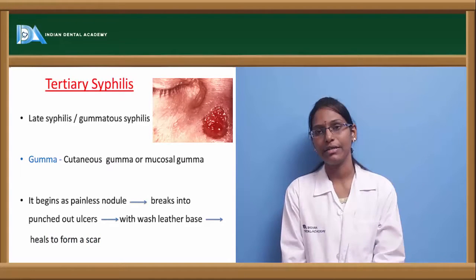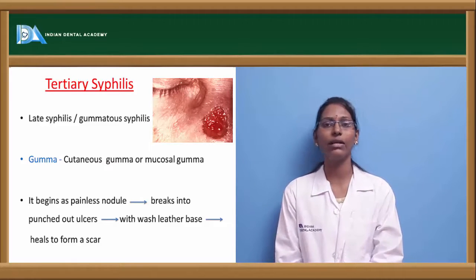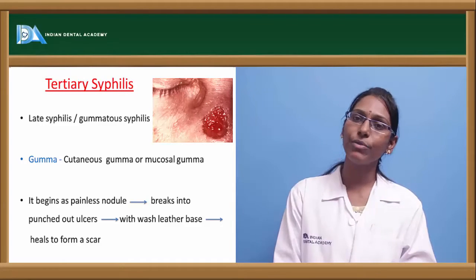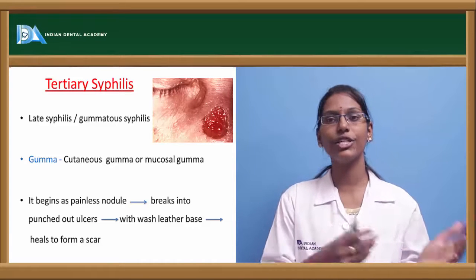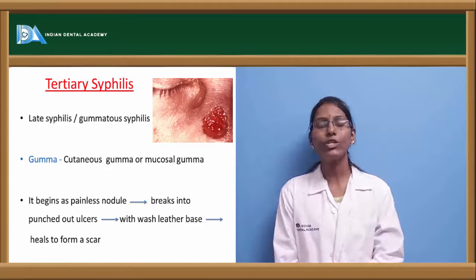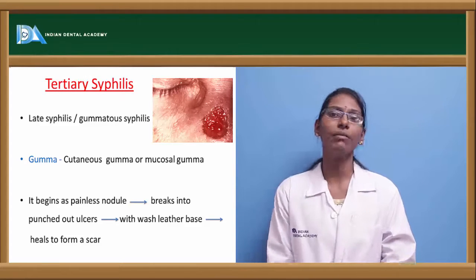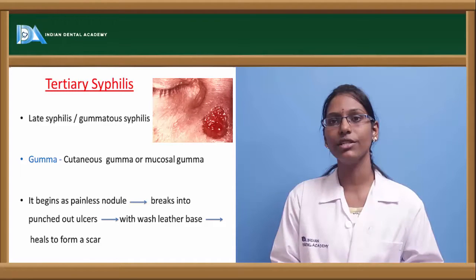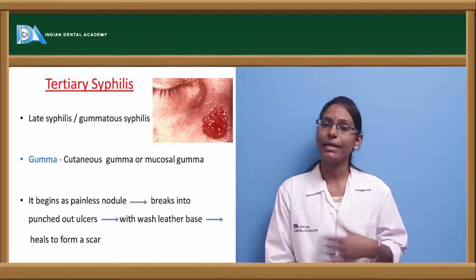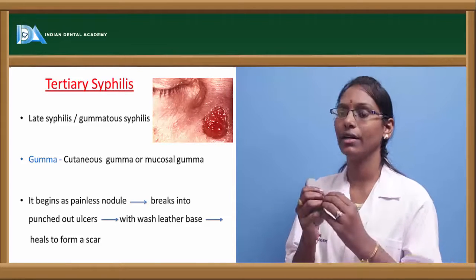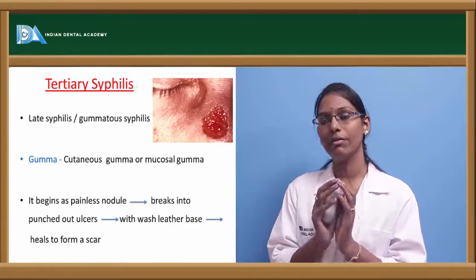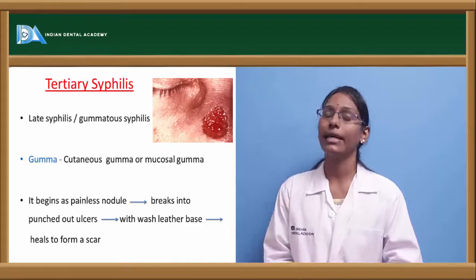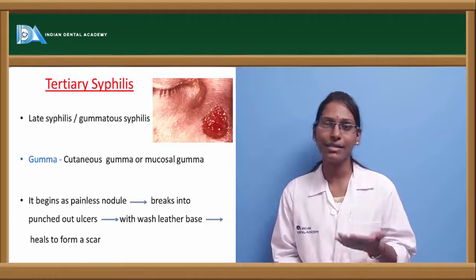Tertiary syphilis is also called gummatous syphilis or late syphilis. Its pathognomonic feature is the gumma, which can be mucocutaneous — either in the cutaneous region or mucous membrane region. It begins as a painless nodule. Importantly, the gumma is not infectious; it manifests due to a delayed hypersensitivity reaction to the spirochete. It breaks down into a punched-out ulcer with a wash-leather base and heals with a scar.